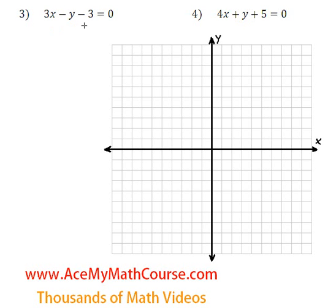And again let's determine the x and the y-intercept for each line and then sketch the graph. Okay, so 3x minus y minus 3 equals 0.